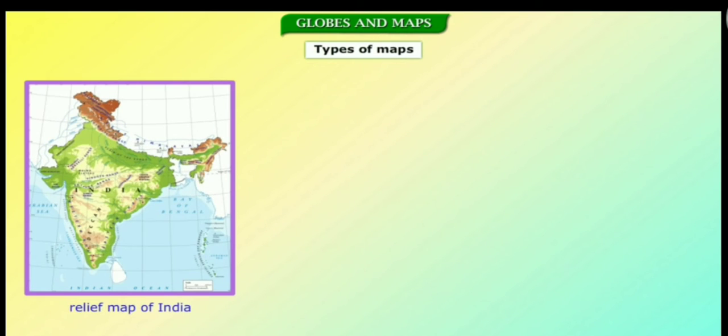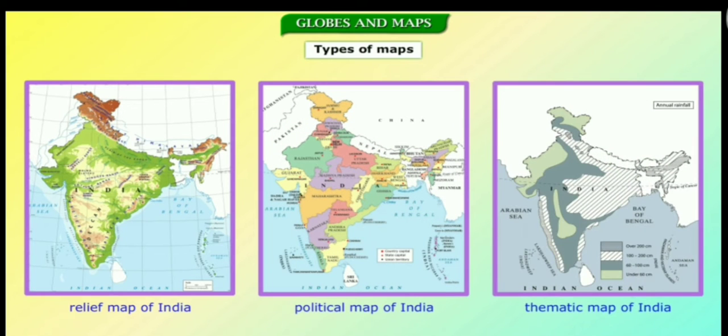There are different kinds of maps such as physical or relief maps, political maps and thematic maps. Physical or relief maps show the various landforms of a region such as mountains, rivers, deserts, lakes and so on.